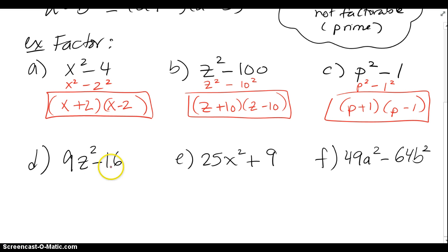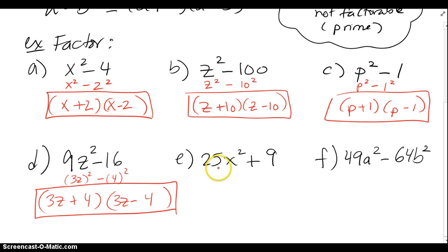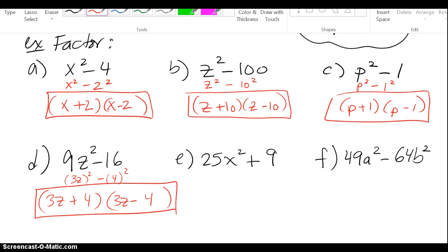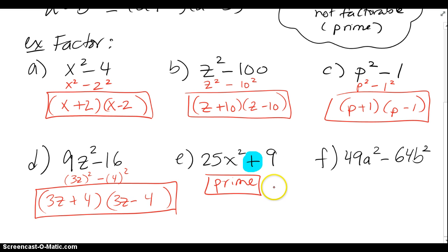For 9z squared minus 16, both are perfect squares. You can think of this as 3z squared and 4 squared. Put one of each: 3z and 3z, and 4 and 4 for the 16, with plus and minus. For the next problem, don't be too quick — there's a plus in the middle. If you have a plus in the middle with perfect squares at the edges, that's actually prime. It won't be factorable no matter what you try. Because of that plus, it's prime.